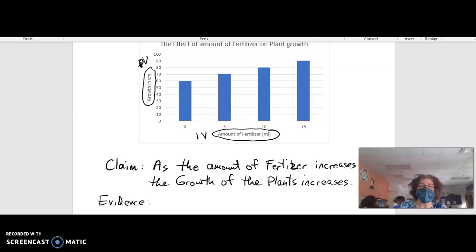now we have to take numbers from the graph that support what we have just said. So the easiest thing to do is to connect a value of the IV that's really low with the actual value of the growth at that point. And then take the highest value of your IV and then say what the growth was for that point.